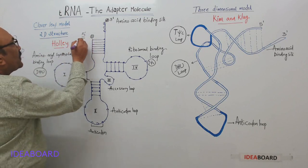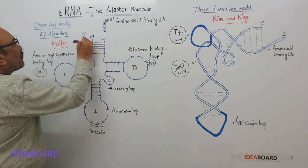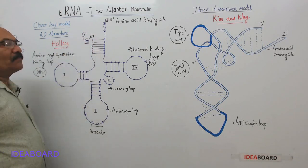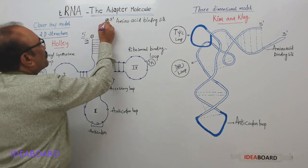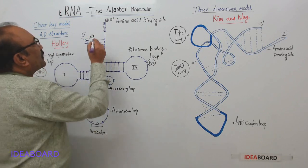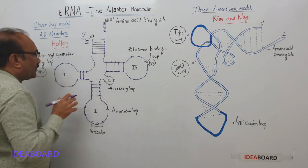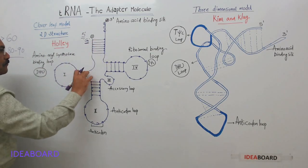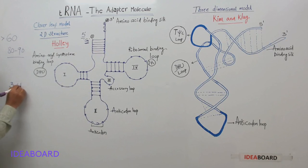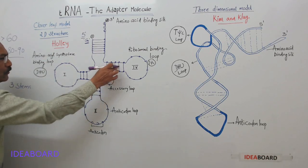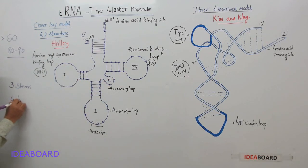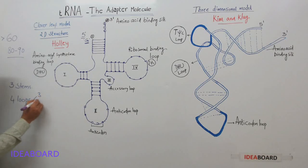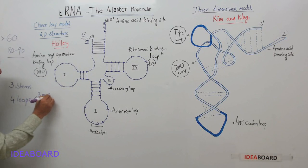At the five-prime end, you will always find an adenine nucleotide. The tRNA is folded and is composed of three stems and four loops. Among the four loops, three are main loops and one is an accessory loop.